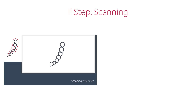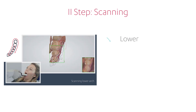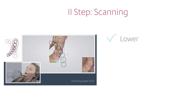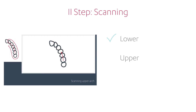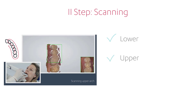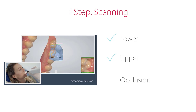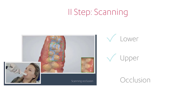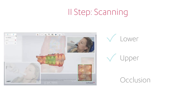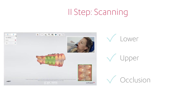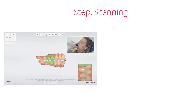The second step of the TRIOS workflow is scanning inside the patient's mouth by following the recommended 3Shape scanning strategy. You'll also scan the lower and upper jaw and register the static and dynamic occlusion. It is also possible to collect other information from the patient's mouth at this stage as well.